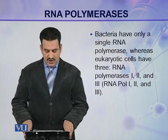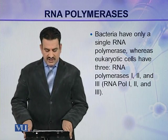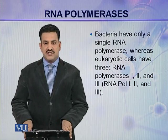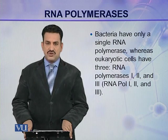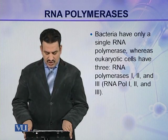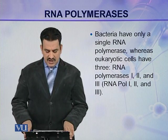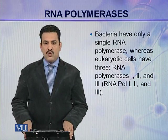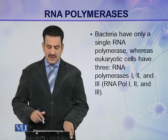Bacteria have only a single RNA polymerase, whereas eukaryotic cells have 3 RNA polymerases: RNA polymerase 1, RNA polymerase 2, and RNA polymerase 3, abbreviated as RNA pol 1, RNA pol 2, and RNA pol 3.